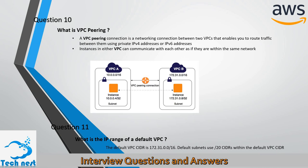Question ten: What is VPC peering? A VPC peering connection is a network connection between two VPCs that enables you to route traffic between them using private IP addresses. Instances in either VPC can communicate with each other as if they are within the same network.